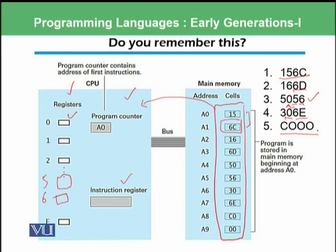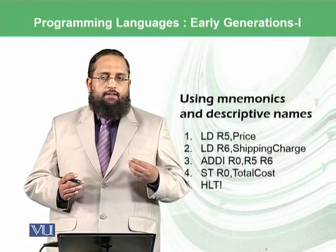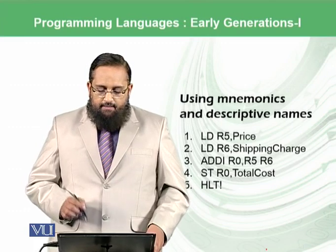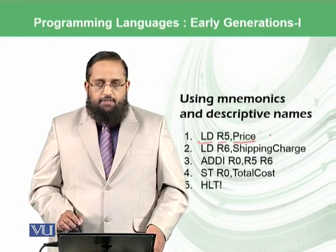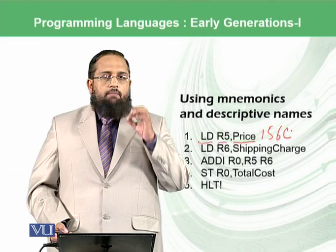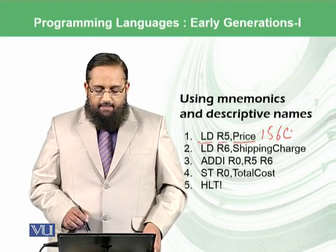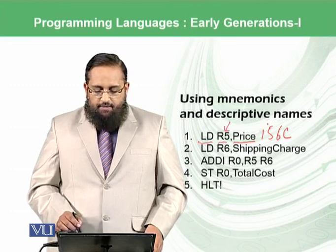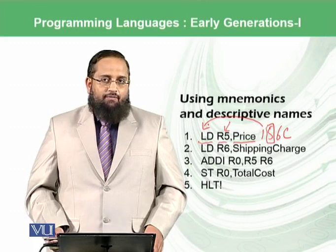So this was basically the programming language which was previously used — the early generation or generation number 1 — where all of the communication was done using machine language. Then there was a shift that we should at least use some mnemonic or some descriptive names. For example, the same instruction is being translated here: it is saying LD R5 price. So this was the instruction 156C from the previous slide. 6C is the memory location and that memory location has been given a name 'price', and that price is actually called a variable in programming language. And R5 has been translated from the register number 5 used in the previous instruction, and the operation has been given the name LD which means load instruction.